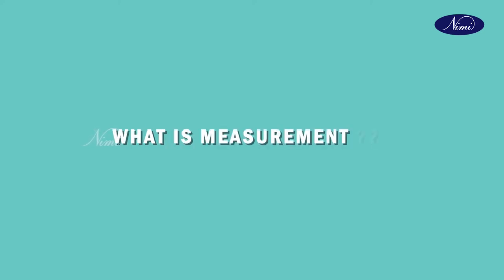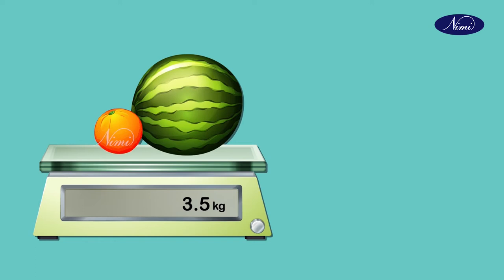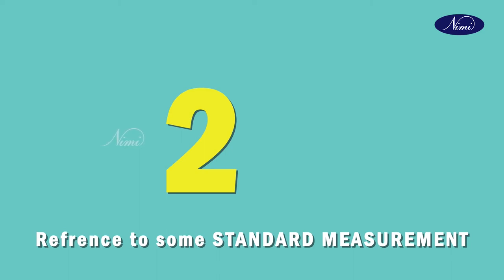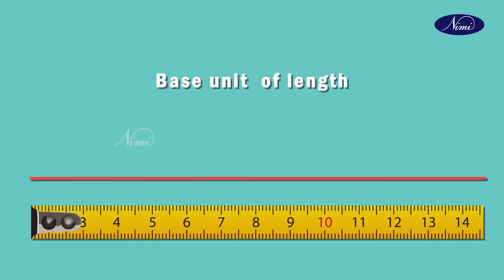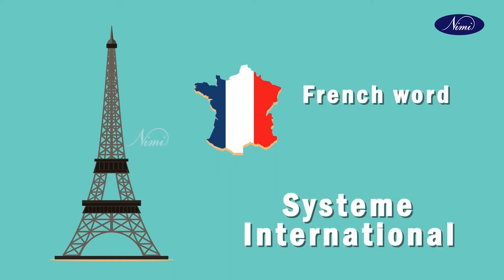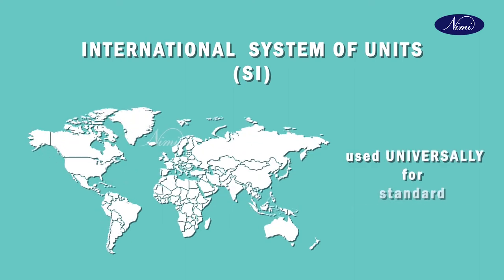Firstly we will see about linear measurements. What is meant by measurements? A number that shows the size or amount of something, usually in reference to some standard measurement such as meter or kilogram. The base unit of length as per SI is meter. SI is an abbreviation of the French word Système International. The international system of units, SI in short form, is the metric system used universally as a standard for measurements.